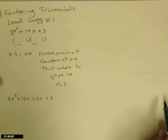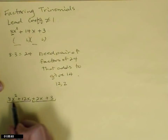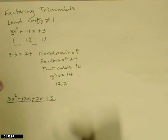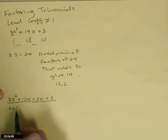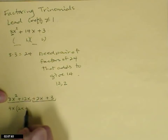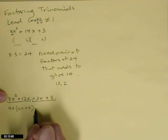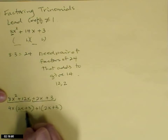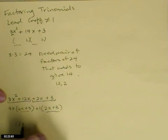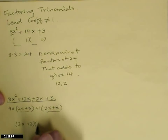Our job is to factor, and factoring something with four terms is done with factor by grouping. Group the first two terms and the last two terms — remember to take the sign with the third one. The greatest common factor in the first group is 4x, leaving behind 2x plus 3. The second group is also 2x plus 3, so we take out a 1. We bring 2x plus 3 out to the front, and the second set of parentheses gets 4x plus 1. That is our answer.